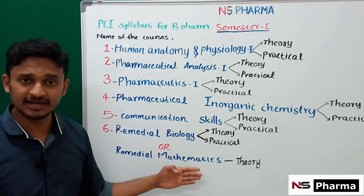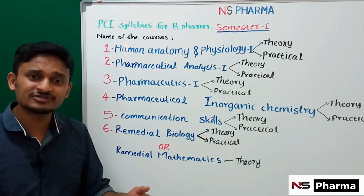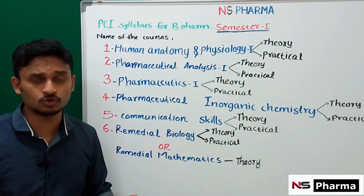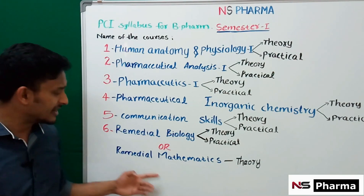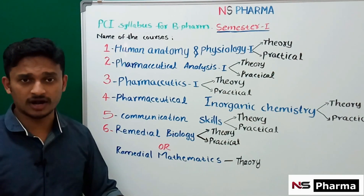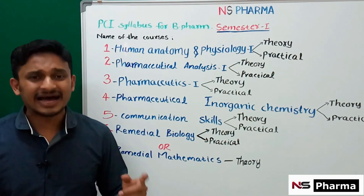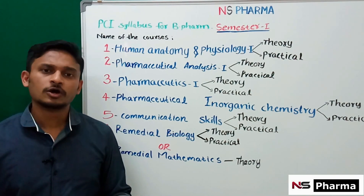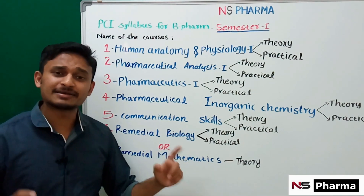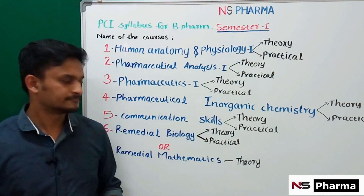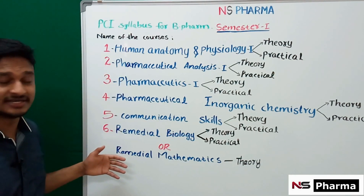The sixth subject is either Remedial Biology or Remedial Mathematics. For Remedial Mathematics, only a theory paper is required. Candidates who studied Biology in Plus Two should study Remedial Mathematics in Semester One, and candidates who studied Mathematics in Plus Two should study Remedial Biology in Semester One of B.Pharm.